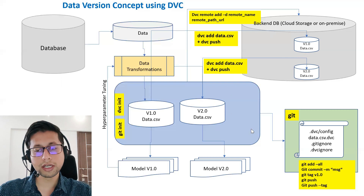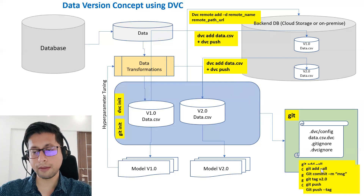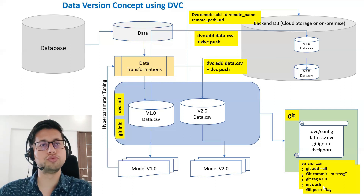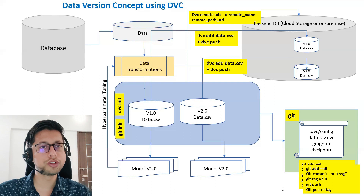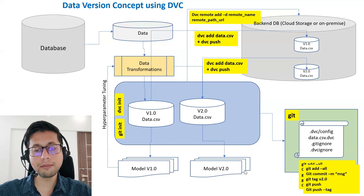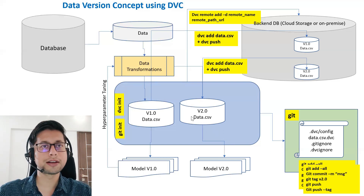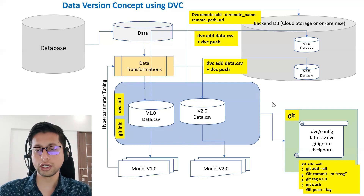After running dvc add, if you run git status it shows that your data.csv.dvc file is modified because a newer version has been generated. You then run the same git commands again — git add -A, git commit, and git tag with a new tag like version 2.0 — whatever naming convention you want to follow. Then run git push to push the reference files, and git push --tags to maintain the tag information in git, so that next time you can pull a particular version of data.